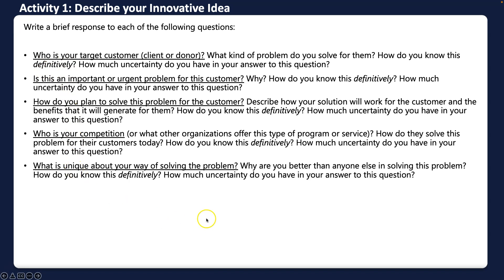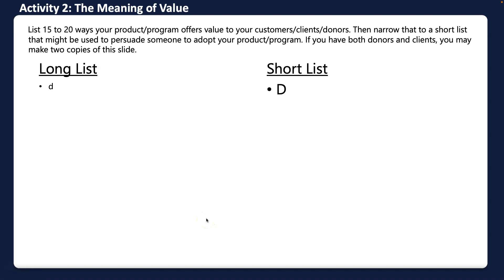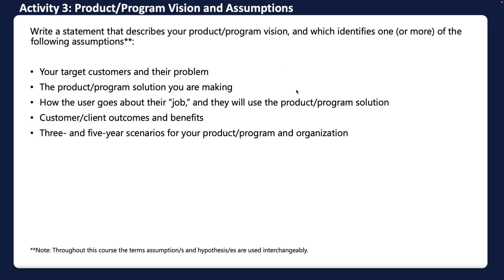In Activity Two, you'll list 15 to 20 ways your product or program offers value on the long list provided. You may not reach 15 to 20, but brainstorm as much as you can — stream of thought. From that long list, you'll create a short list of maybe three to five items that seem most likely to gain traction with your customers, donors, or clients. If you have different customer segments, consider doing separate copies of this slide.